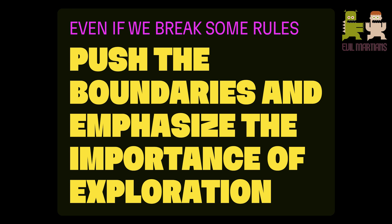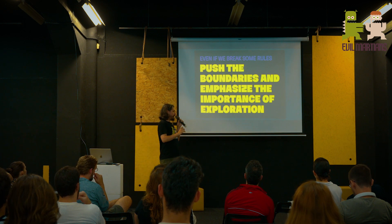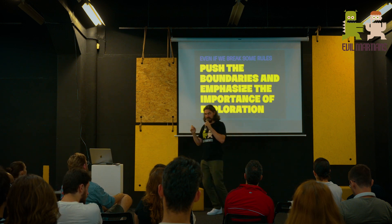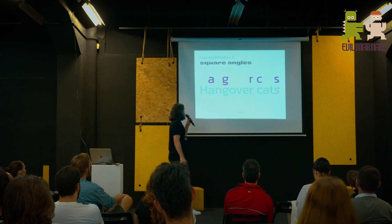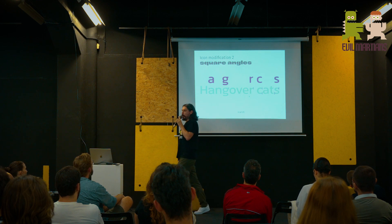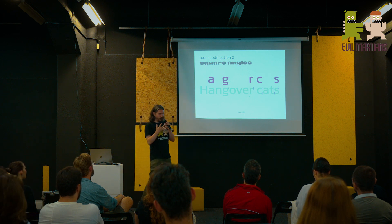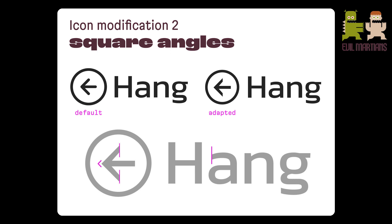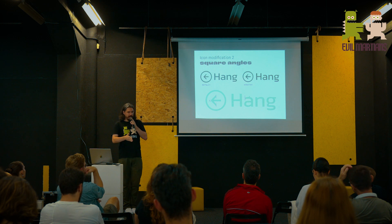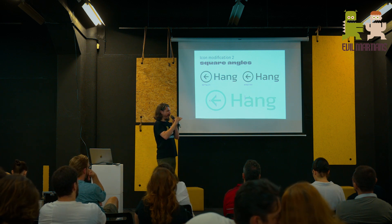Here we arrive at an important rule: even if we break some rules, push the boundaries and emphasize the importance of exploration. You need to be brave and explore. Next example: square angles. Take a look at the test title 'Hangover Cats' and highlight the letters. The big resemblance here is the square angles at the ends of the strokes. We already know what we can do with that — adapt and apply it to the arrow. Here is the adapted version: we take the square angles, apply them to the arrow sides and arrow construction, and we have that beautiful squareness.